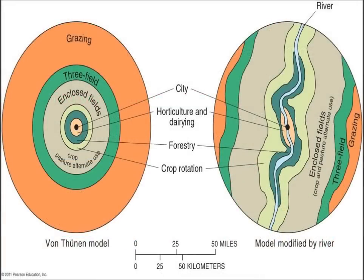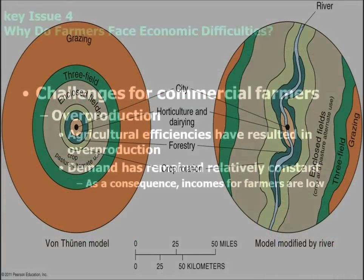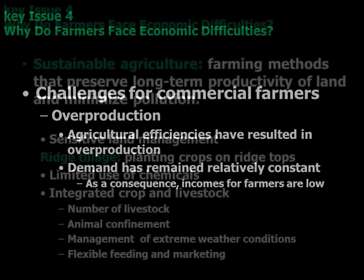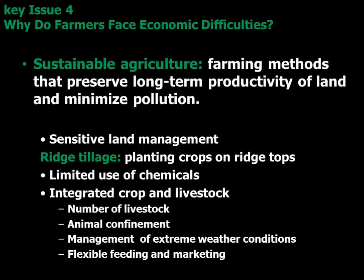We looked at Mediterranean agriculture — know what types of products are grown and what is least likely. Much more fruits, cereals, olives, grapes, those kinds of things.